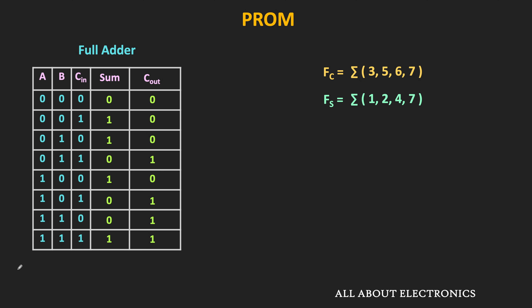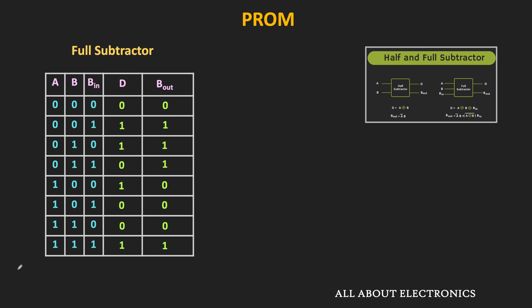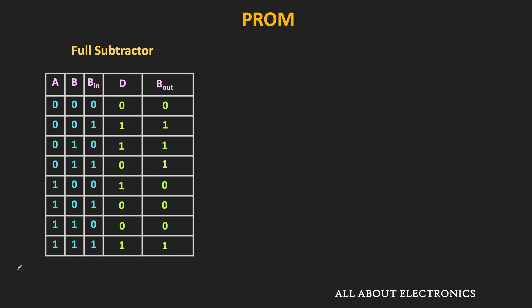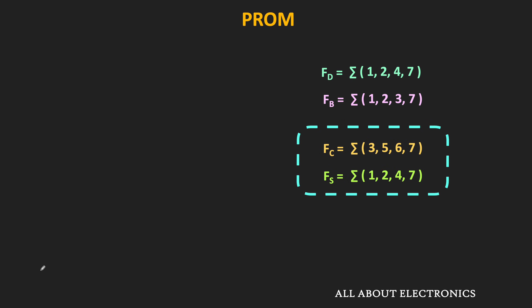Similarly, let us find the expression for the full subtractor. This is the truth table of the full subtractor. As you can see, the difference output is equal to 1 for four different min terms — that is min terms m1, m2, m4, and m7. And if you see the borrow output, then it is also equal to 1 for four different min terms — that is min terms m1, m2, m3, and m7. In this way, we get the expressions for the difference and borrow output of the full subtractor in SOP form, giving us two expressions for the full subtractor and two for the full adder.